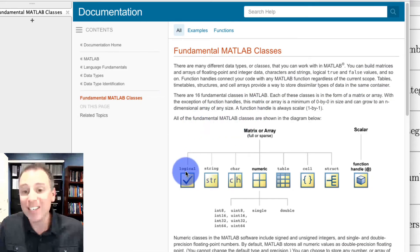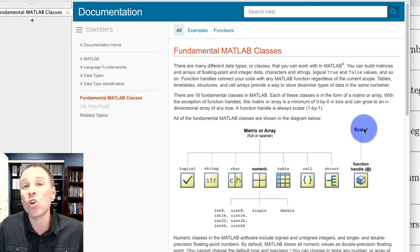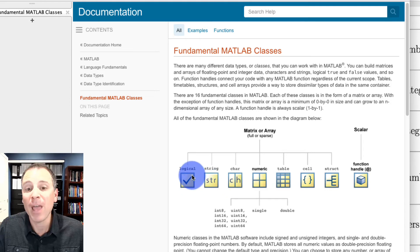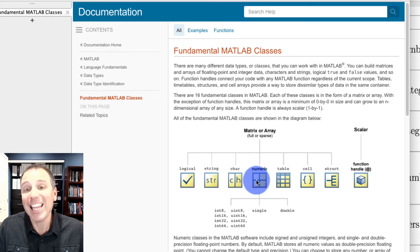Remember, this diagram describes 16 array-based classes in MATLAB and also one scalar-based class. The scalar-based class is called function handles. The array-based classes, there are seven different categories: logical, string, char, character, numeric, table, cell, and structure. In this category called numeric, there are actually 10 different fundamental data classes that we offer.